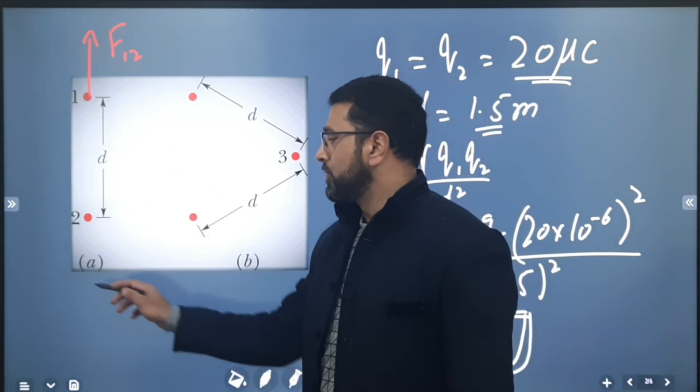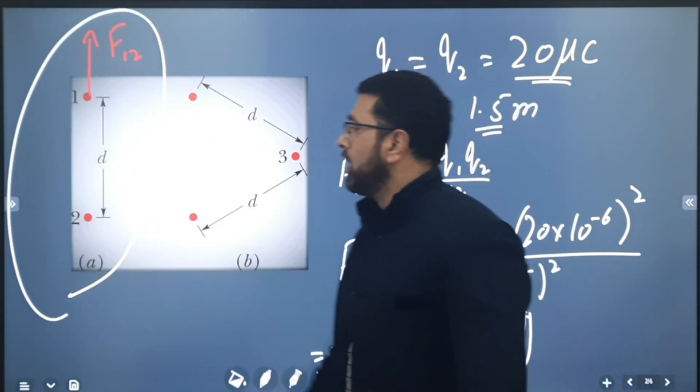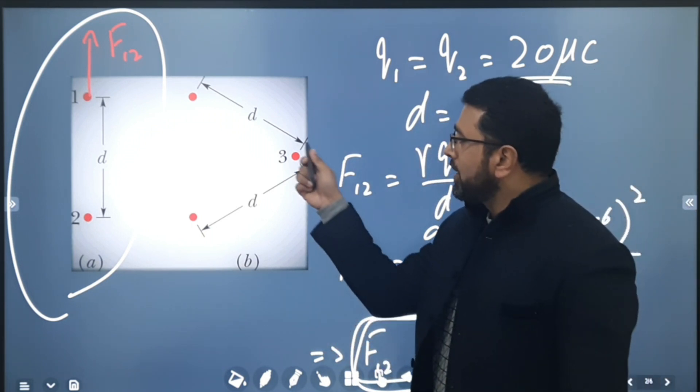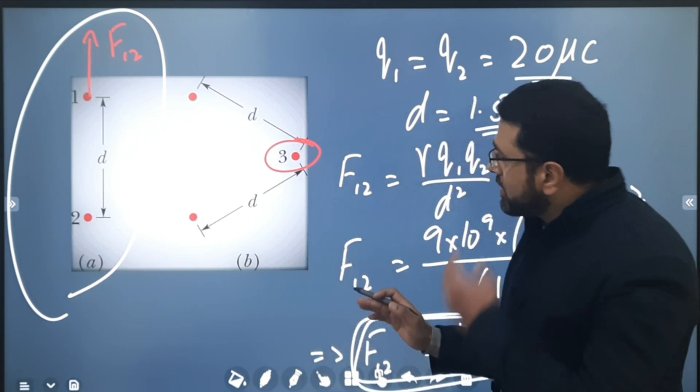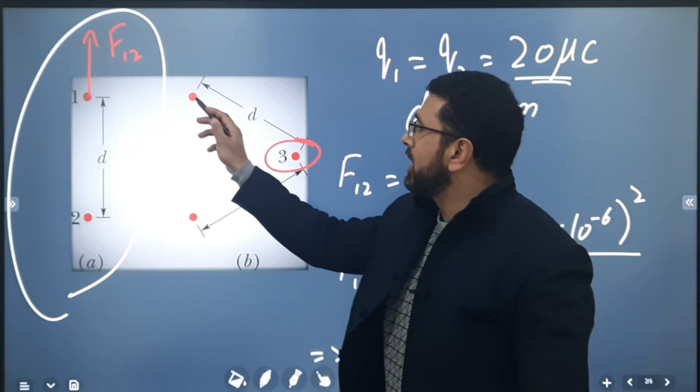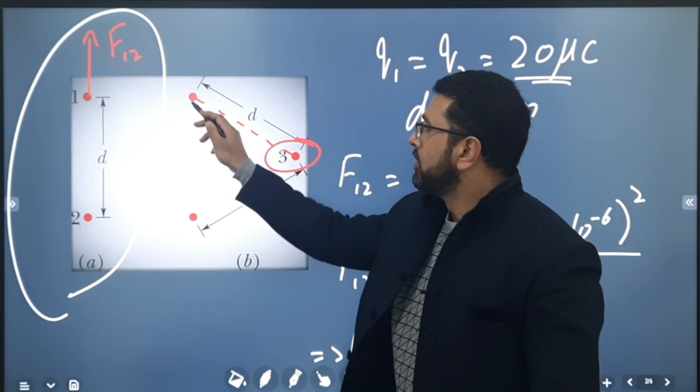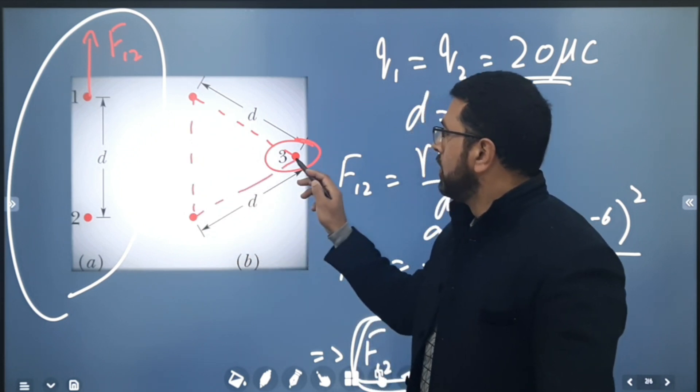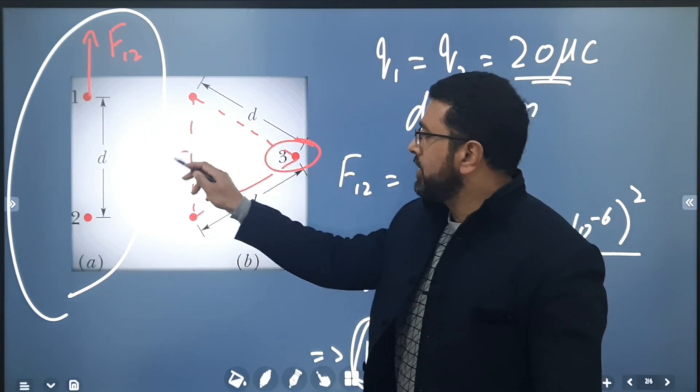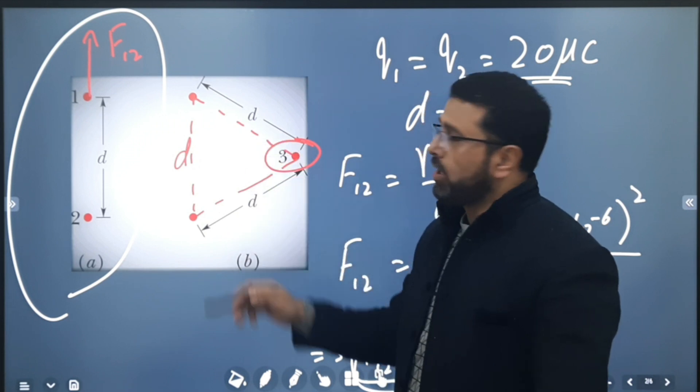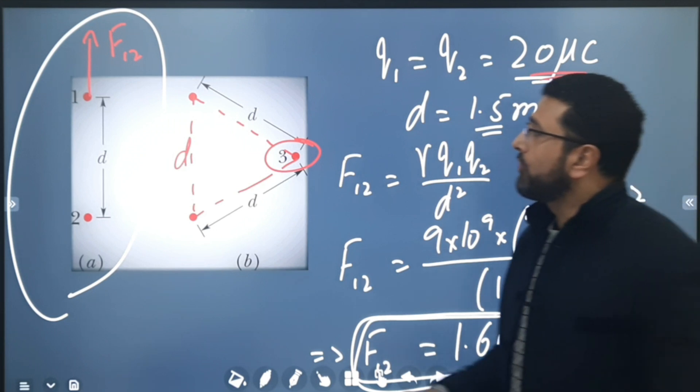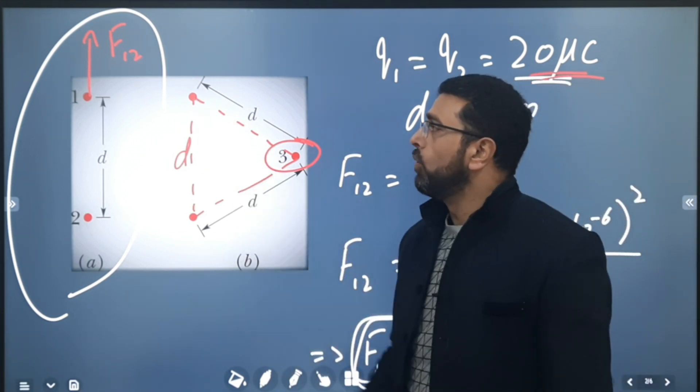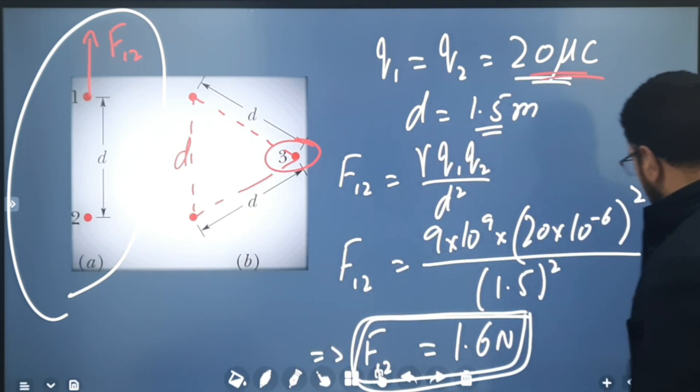In this situation now, a third particle is added to the group. The third particle is added in such a way that it forms an equilateral triangle. So this is d, this is d, this was already d, so these two are also d. The third particle has the same charge of 20 microcoulombs. We have to find out net force on particle 1.